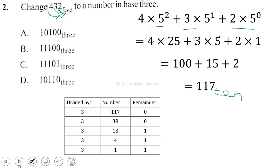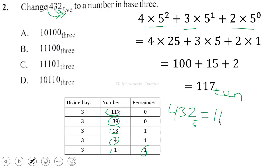Now we convert 117 base 10 into base 3 by dividing repeatedly by 3. 117 ÷ 3 = 39 remainder 0; 39 ÷ 3 = 13 remainder 0; 13 ÷ 3 = 4 remainder 1; 4 ÷ 3 = 1 remainder 1; 1 ÷ 3 = 0 remainder 1. Reading remainders upward, 432 base 5 equals 11100 base 3. So option B is correct.